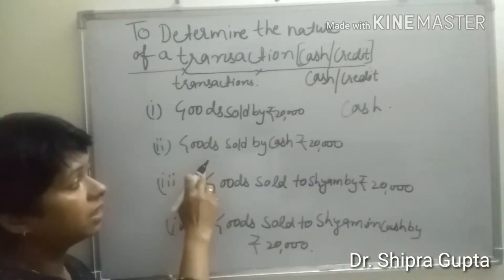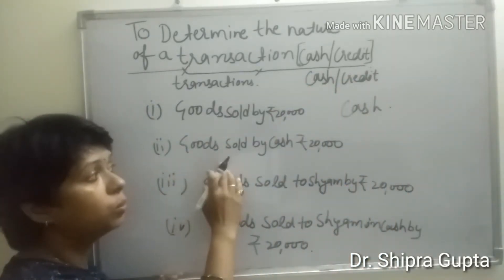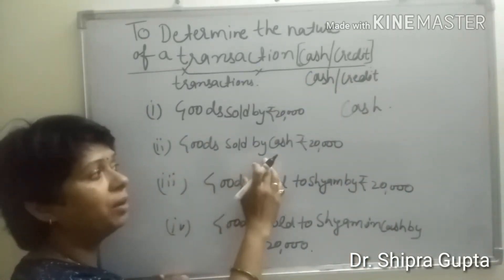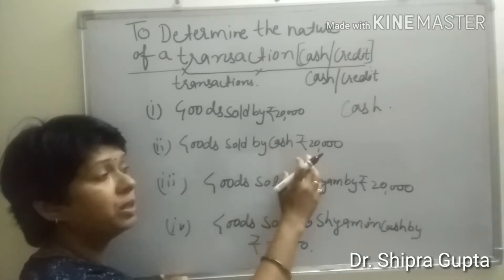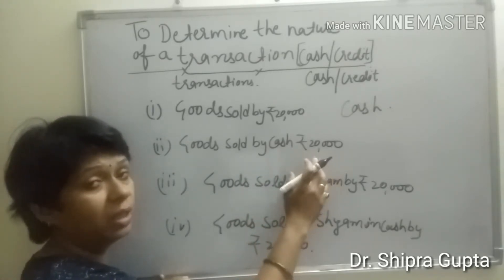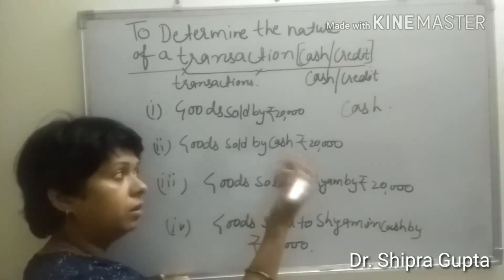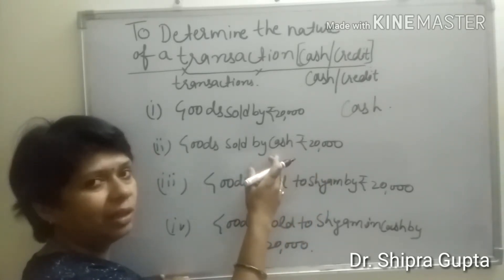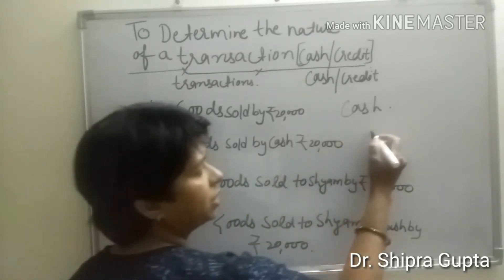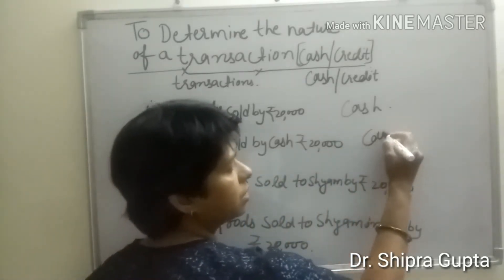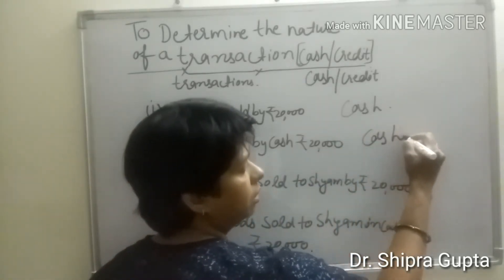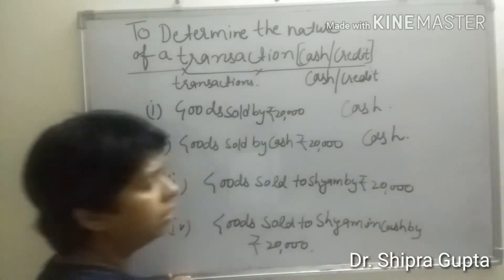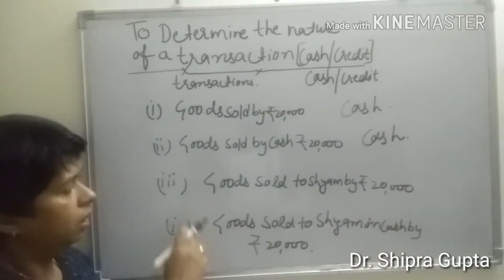In the second transaction, goods sold by cash, rupees 20,000. It is directly clear — this transaction is related to cash. So this transaction directly goes to cash.